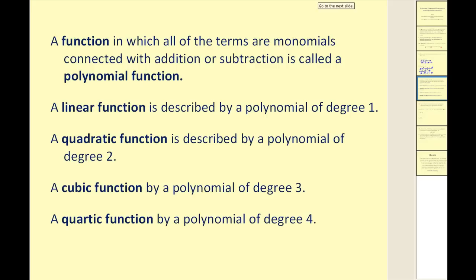Now let's talk about polynomial functions. A function in which all of the terms are monomials connected with addition or subtraction is called a polynomial function. A linear function is described by a polynomial of degree 1, a quadratic function by degree 2, a cubic degree 3, and a quartic degree 4.